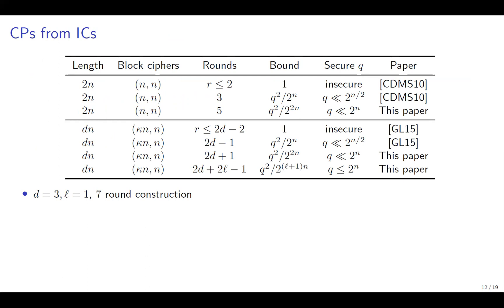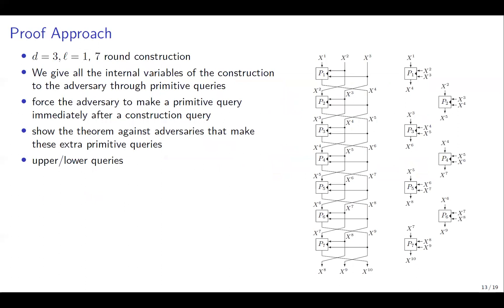Let me present an overview of our security proof, using the example D equals 3 and L equals 1, giving a seven-round construction. Our approach is to give all internal variables of the construction to the adversary through primitive queries, forcing the adversary to make a primitive query immediately after each construction query. We prove the theorem against adversaries making these extra primitive queries, and during the proof we formalize the concepts of upper and lower queries to complete the proof.